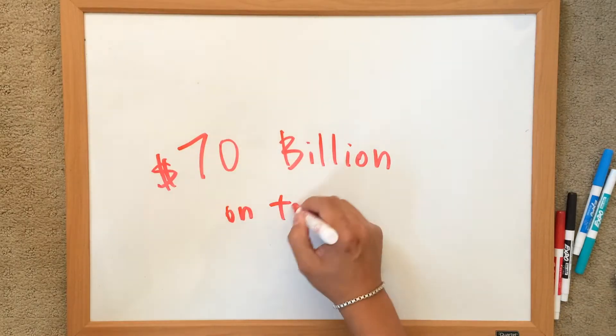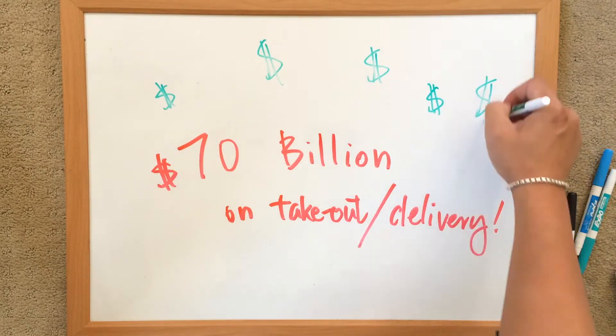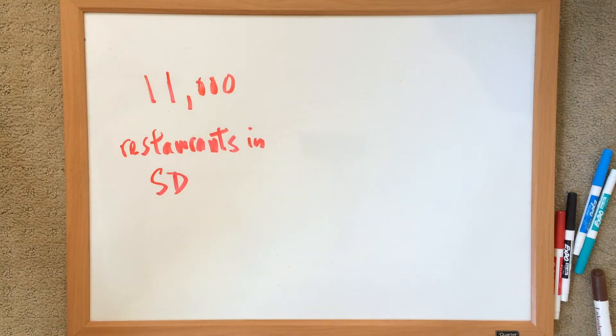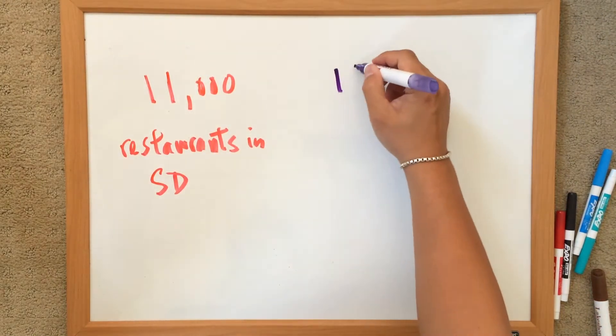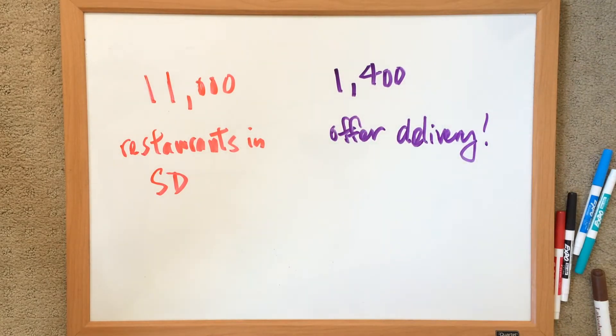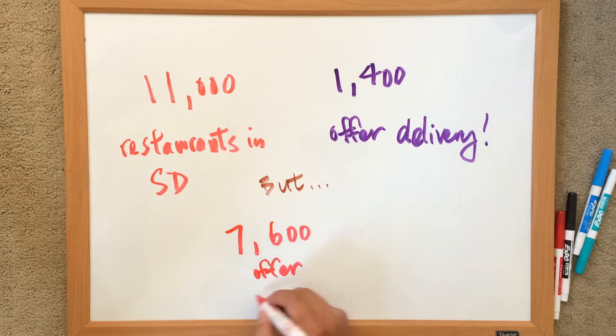Americans spend over $70 billion on takeout and food delivery every year. San Diego alone has over 11,000 restaurants, and only 1,400 of them offer delivery. But 7,600 of them offer takeout. That's 70% of them that can offer delivery as long as there's someone there to deliver that order.